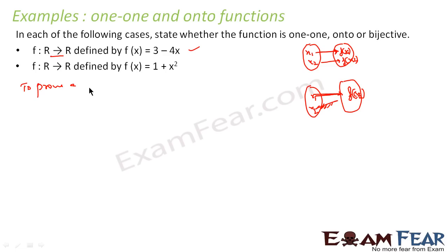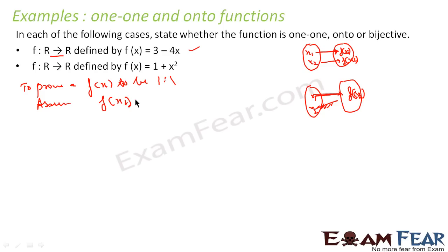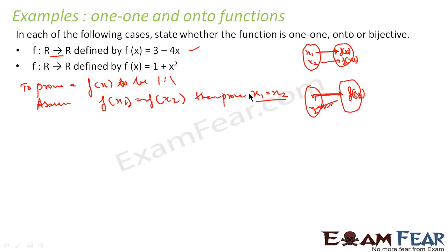To prove a function is one-to-one: assume f(x1) = f(x2), then prove x1 = x2. If you can do this, it implies the function is one-to-one.